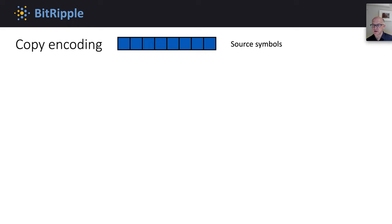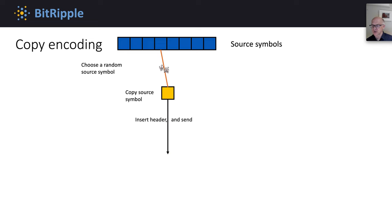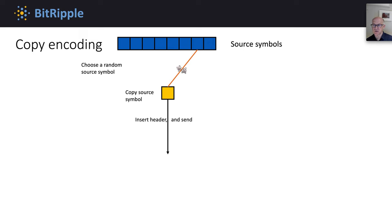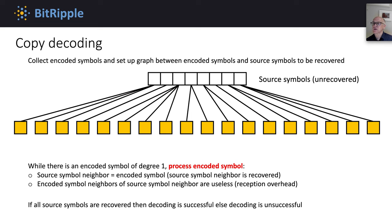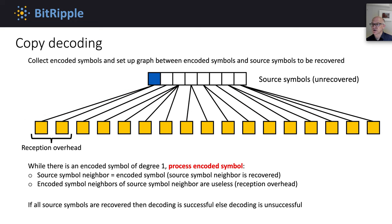Copy encoding is a very simple way of encoding. At each step, a random source symbol is chosen, that source symbol is copied to the encoded symbol, the encoded symbol is placed into a packet with a header, and the packet is sent. This simple process is repeated independently for each encoded symbol. Copy decoding consists of collecting the received encoding symbols and setting up a graph between the encoded symbols and the source symbols to be recovered. This graph can be set up based on the headers in the received encoded symbol packets. For each received encoded symbol, its neighboring source symbol can be immediately recovered by just copying the encoded symbol to the source symbol. Unfortunately, there may be other encoded symbols which have that same source symbol as a neighbor, in which case those encoded symbols are useless because the source symbol they can recover has already been recovered.